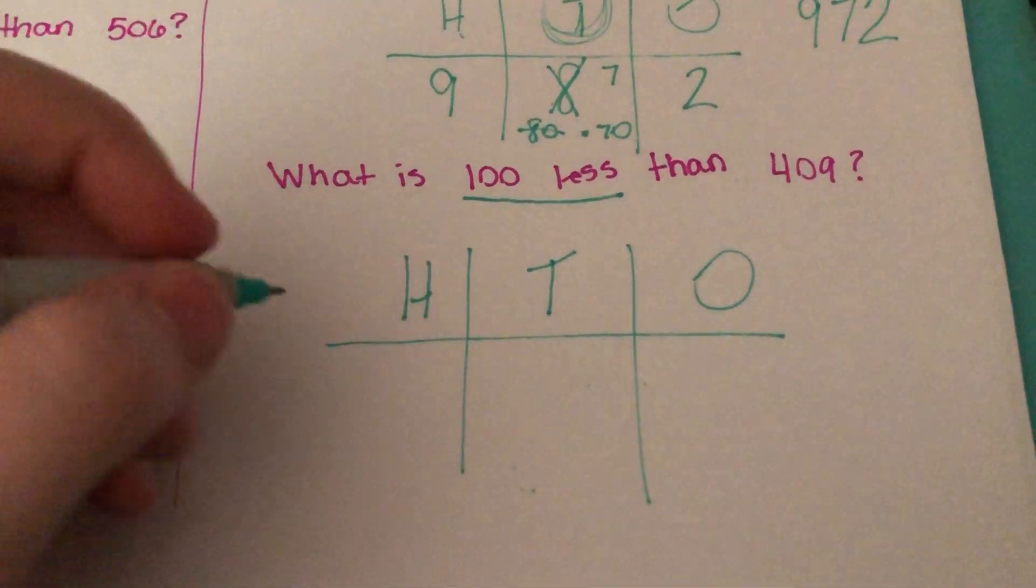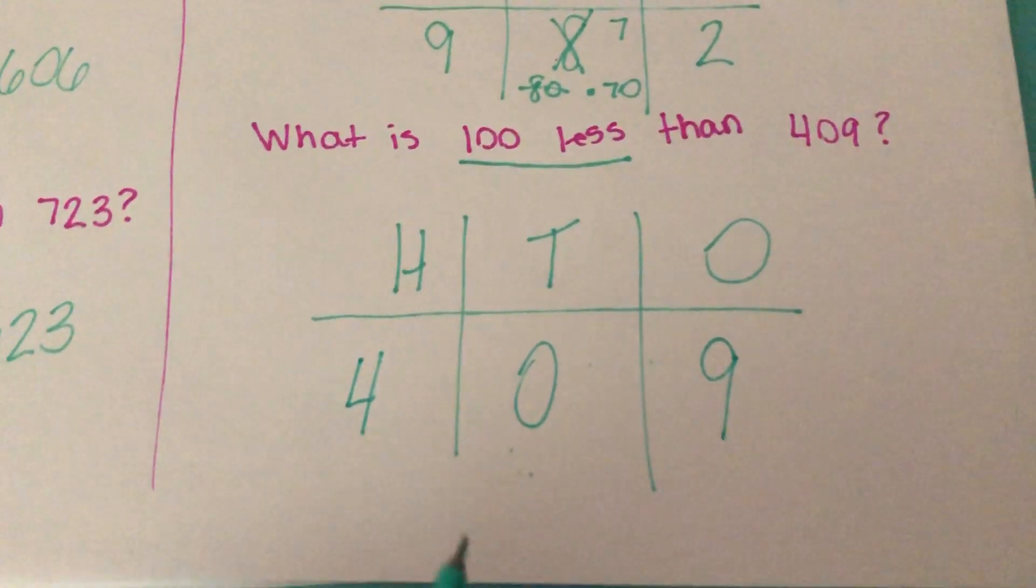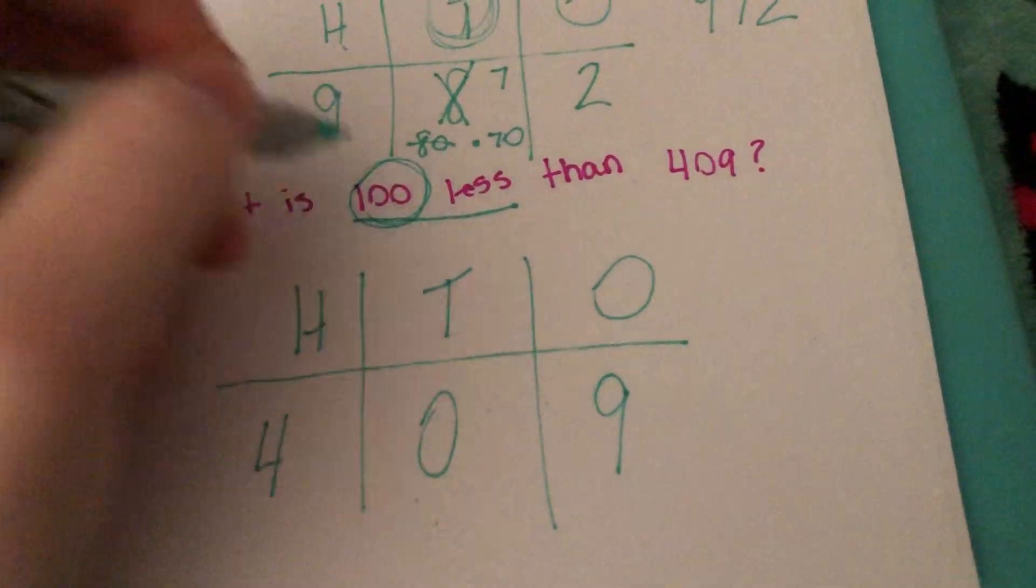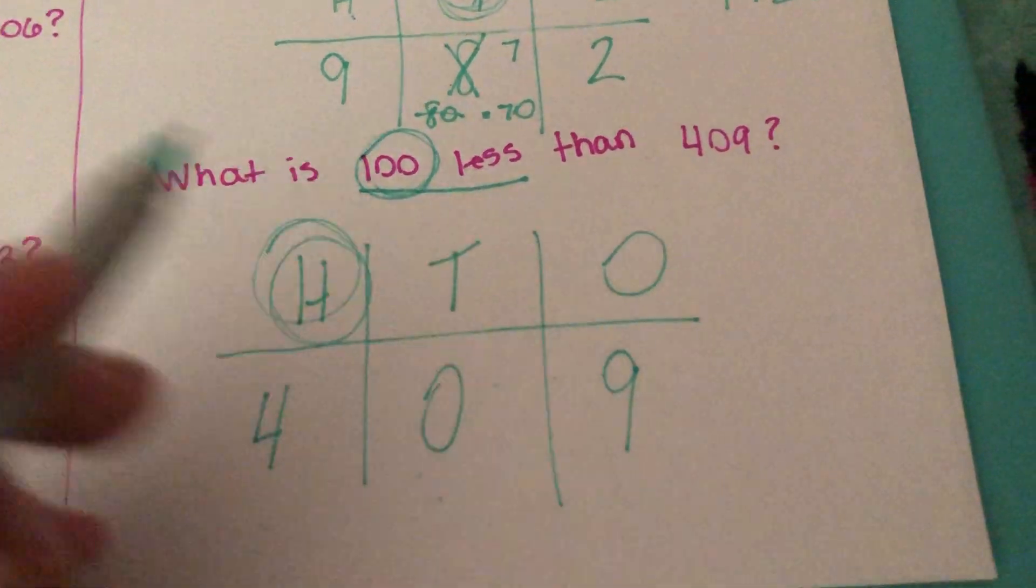We need to insert our 409. Now we're taking a look at the hundreds place. So we're looking at the hundreds place. 100 less.